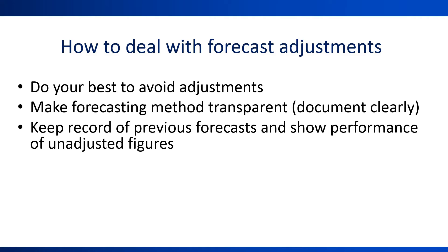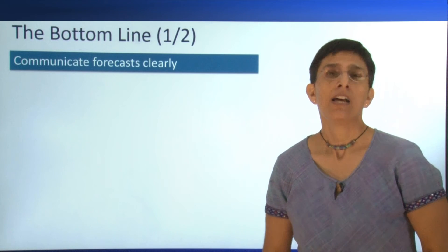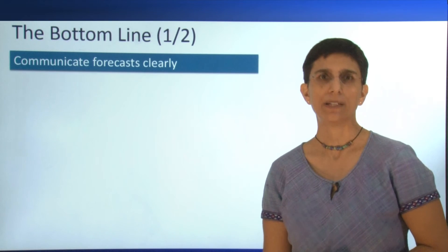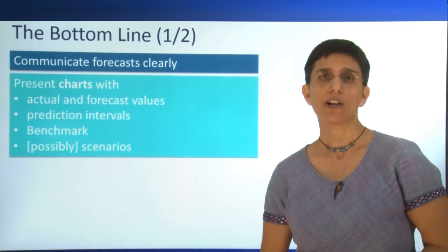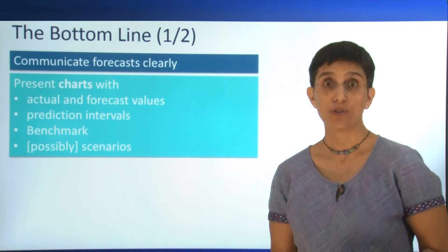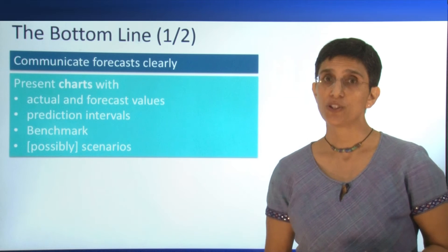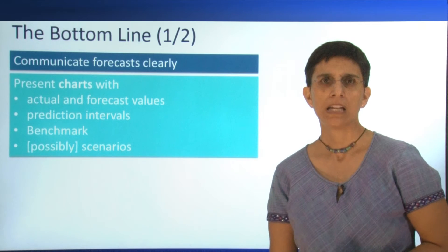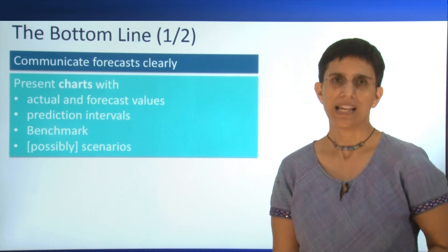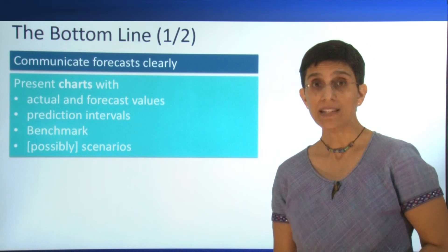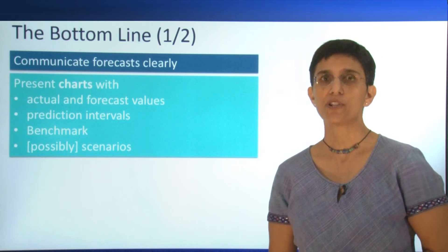This is why keeping a record of your forecasts and the actuals is extremely important. To summarize, the main point is to communicate the forecasts you generated very clearly. When using charts, distinguish clearly between actual and forecasted values and include both on the chart. It's very advisable to use prediction intervals to convey the uncertainty associated with the forecasts. Using benchmarks is extremely important, especially if those benchmarks represent the current practice. And in some cases, it's useful to show forecasts under different scenarios.